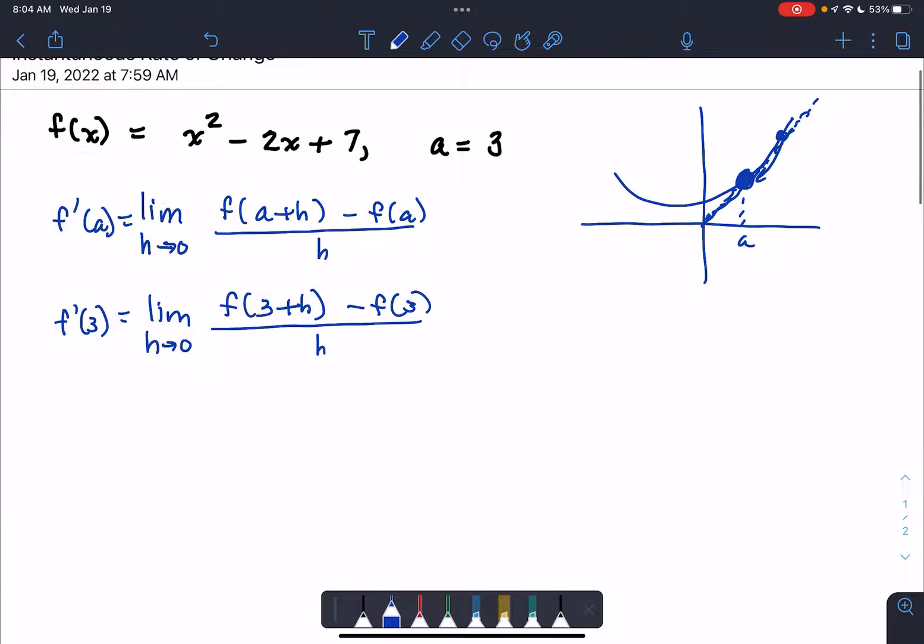Okay, so let's look at the different parts of this. So if we want to find f of 3 plus h, that's 3 plus h squared minus 2 times 3 plus h plus 7. Now 3 plus h the quantity squared is 9 plus 6h plus h squared minus 6 minus 2h plus 7.